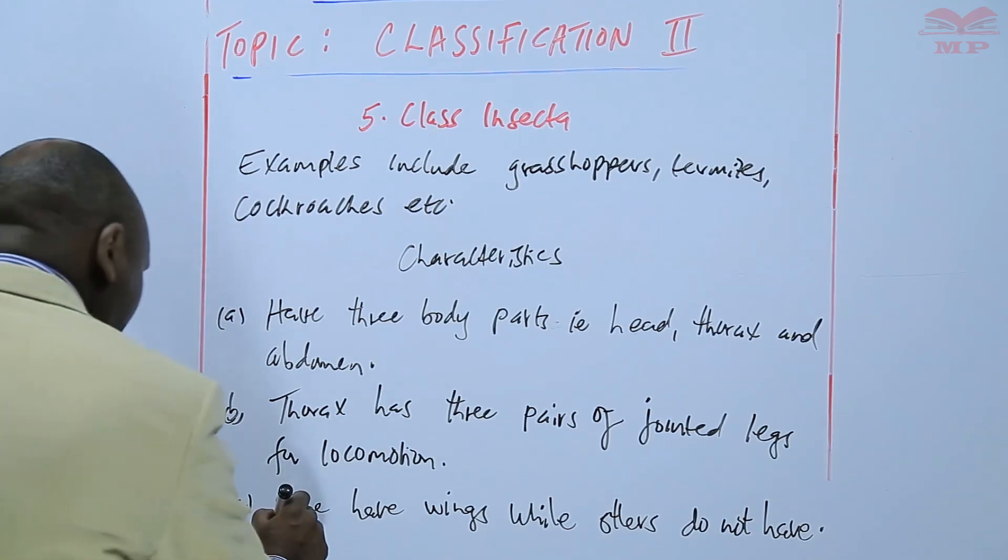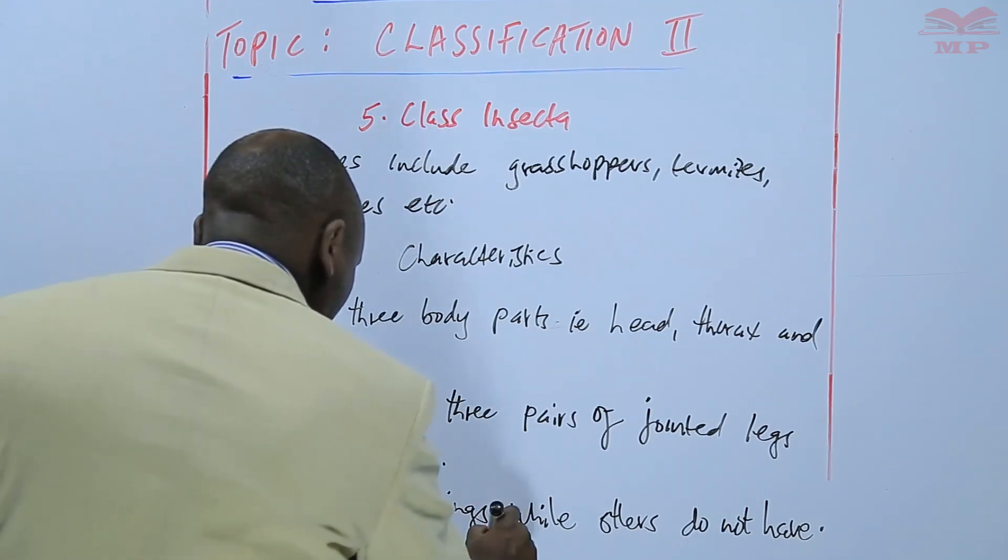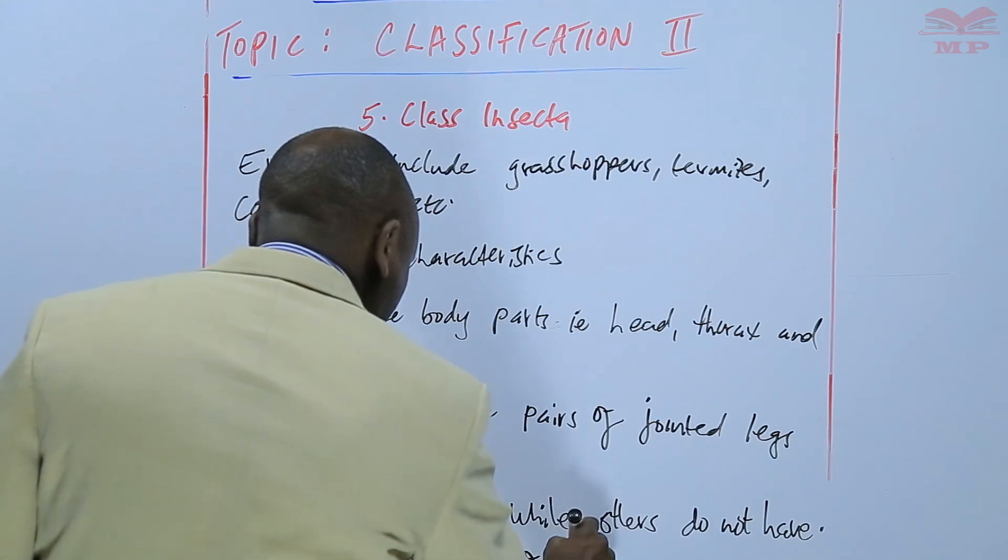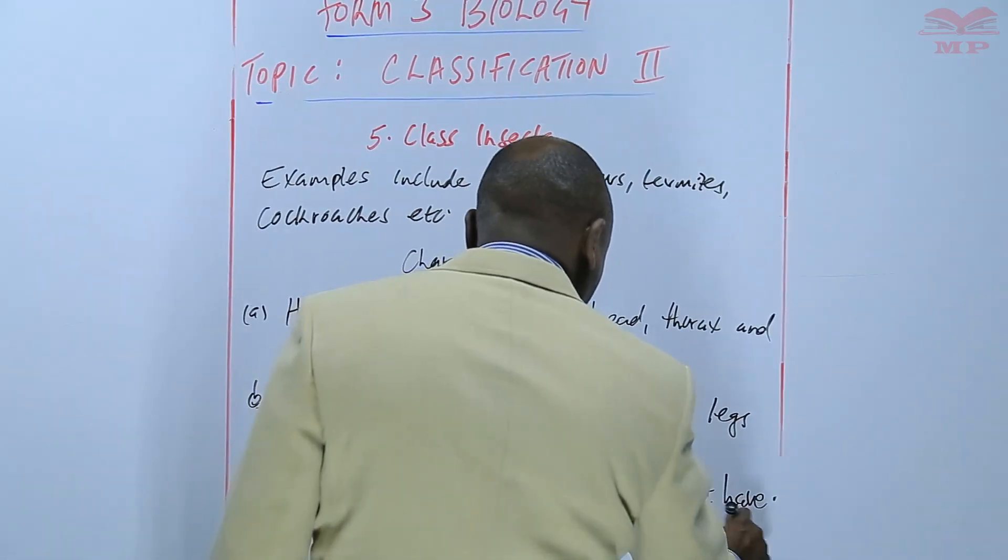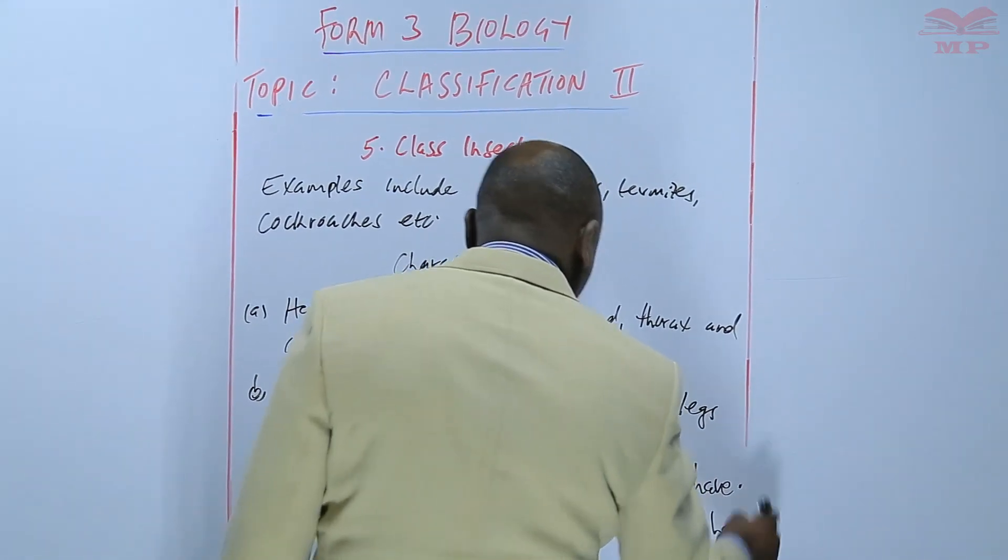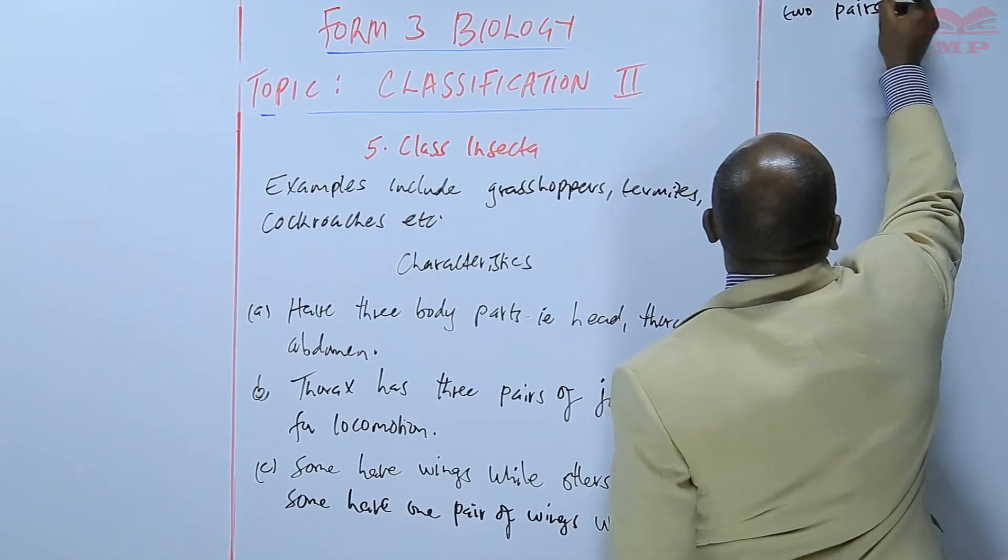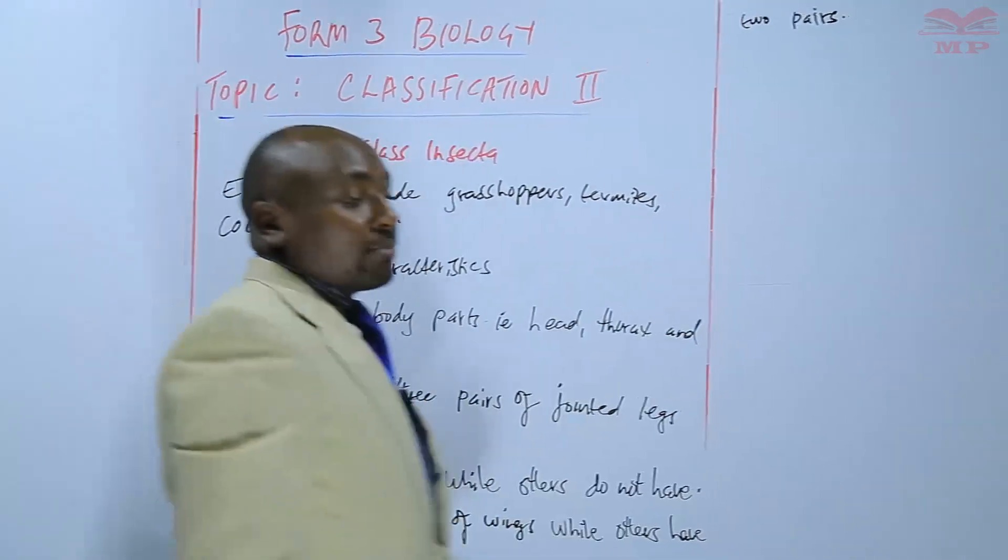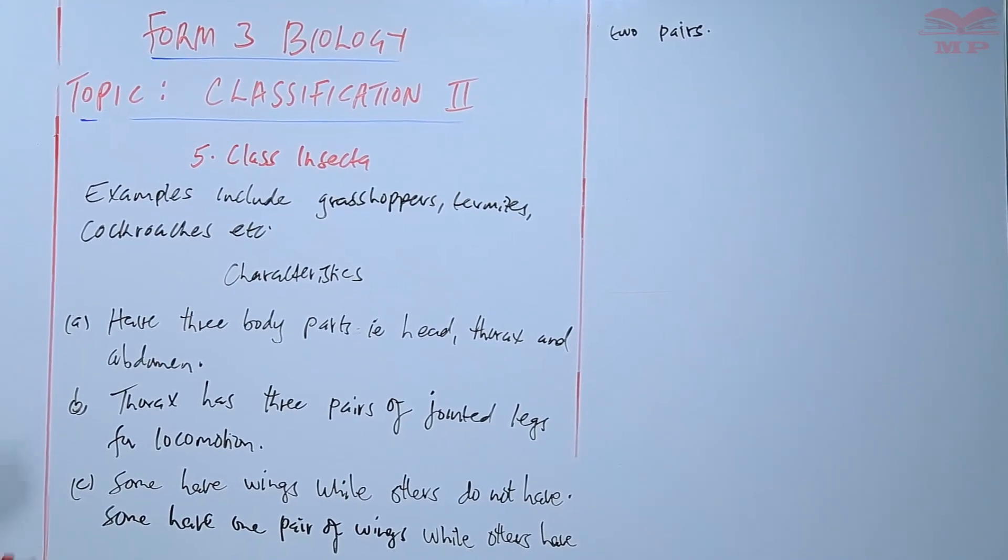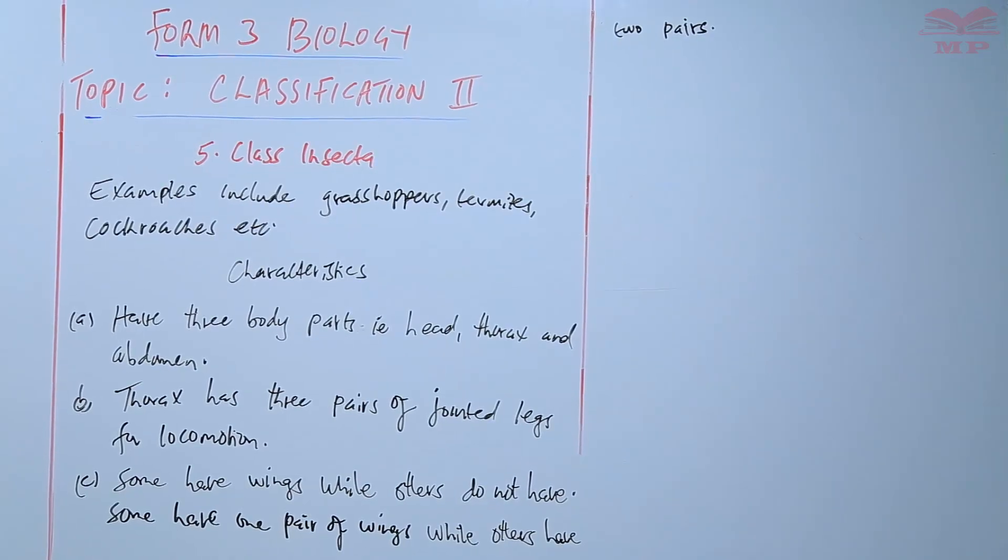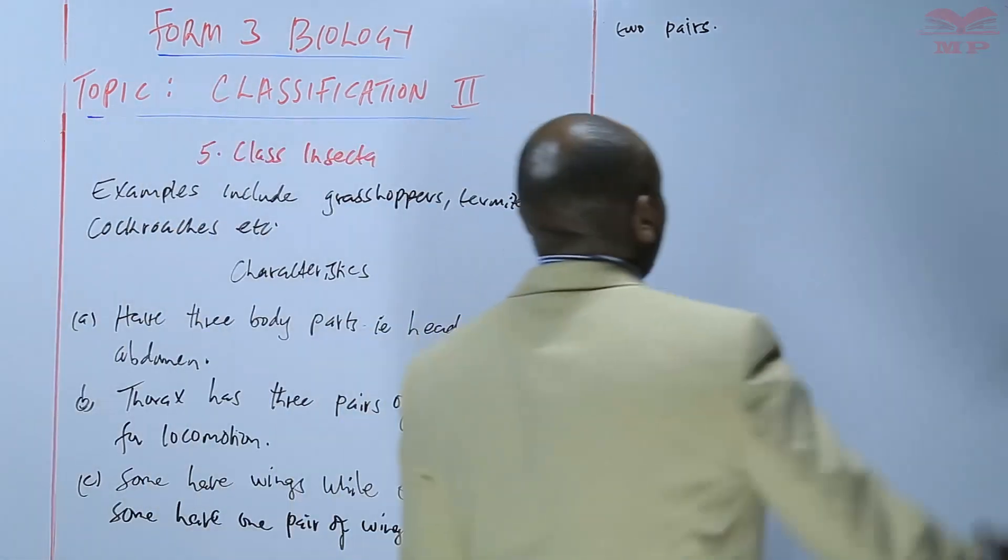One pair of wings, especially things like the butterflies and the moths, those ones have two pairs of wings, whereas the bees and the house flies will have one pair of wings. And of course the wings are modified for locomotion as well.